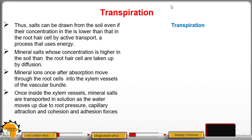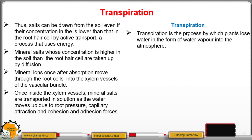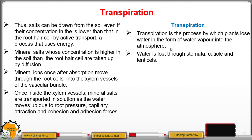Let us now look at the process of transpiration. This is the process by which plants lose water in the form of water vapor into the atmosphere. Water is lost through the stomata, cuticle, and the lenticels.